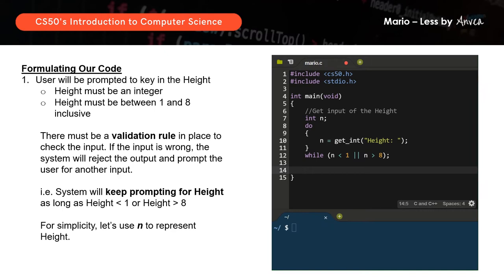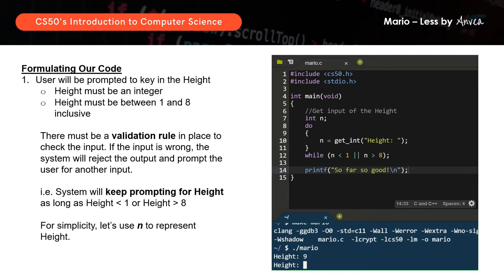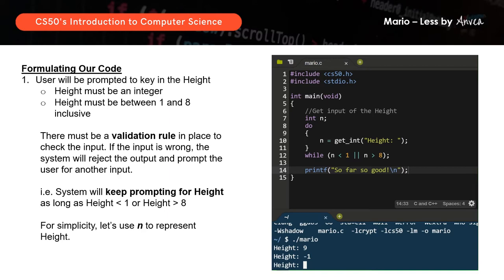Let's try this — make mario, dot slash mario. Let's key in 9. Good, we can see it rejected. Let's key in minus 1. Good, it rejected it. Now let's key in height equals to 3 — so far so good. Let's key in height equals to 8 — so far so good. So now let's move on to formulating how we want to tell the system to print the hashes.